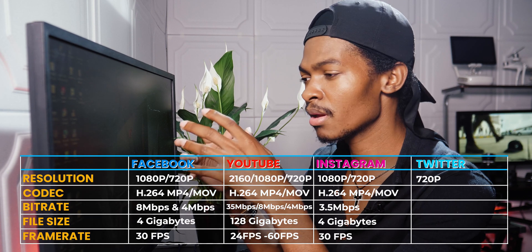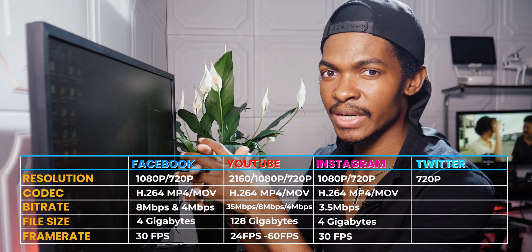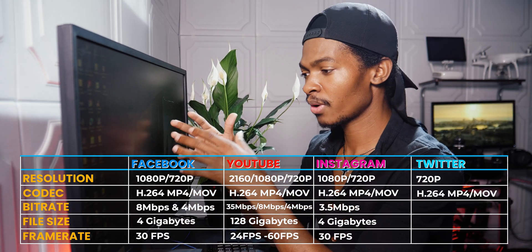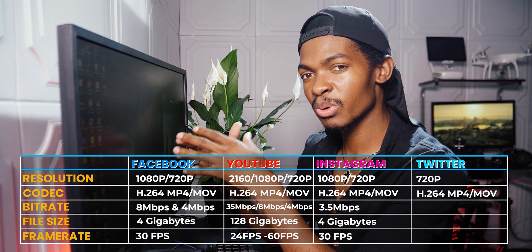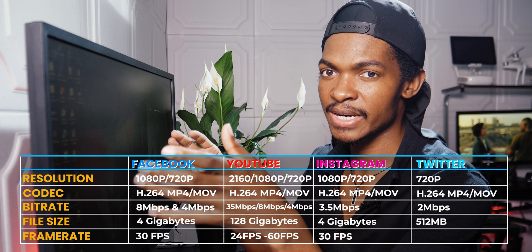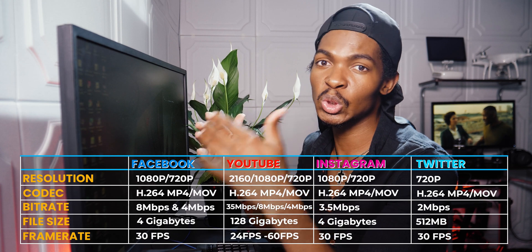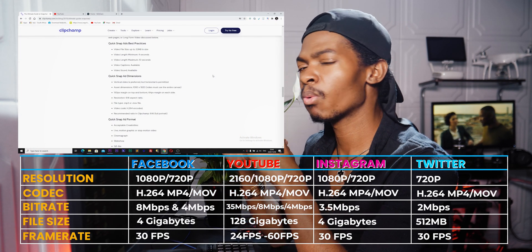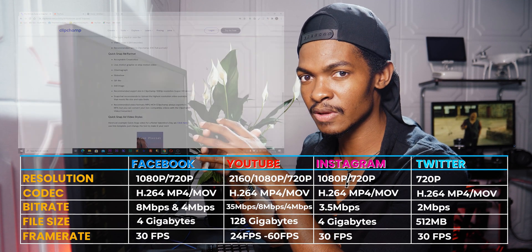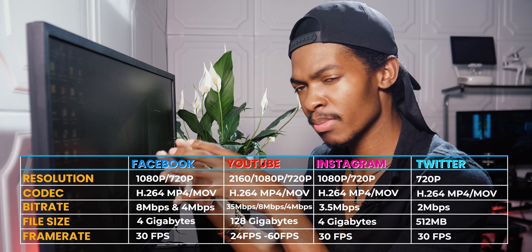For Twitter, the maximum resolution is 720p; codec — H.264 with MP4 or MOV file format; bitrate — 2 megabytes per second maximum; file size maximum — 512 megabytes; frame rate — 30 frames per second. For Snapchat and other social media platforms, just go to their website and find their recommended video settings.